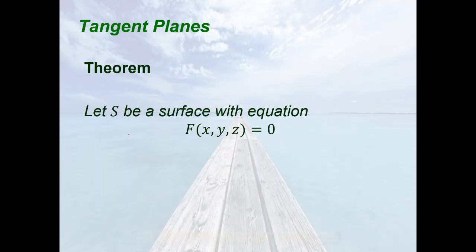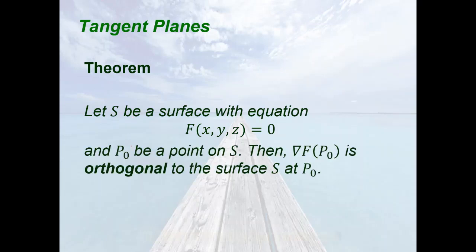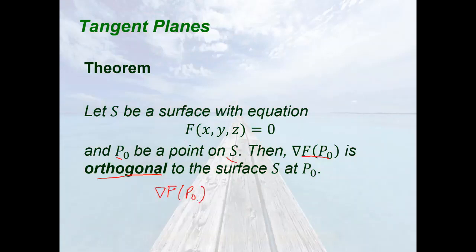So we have this theorem. Let S be a surface with equation f(x, y, z) = 0, and let p₀ be a point on S. Then the gradient of f at the point p₀ is orthogonal to the surface S at p₀.